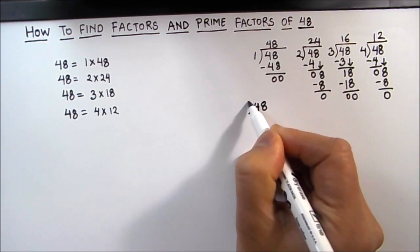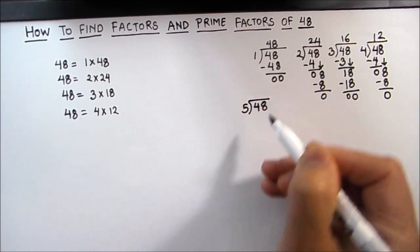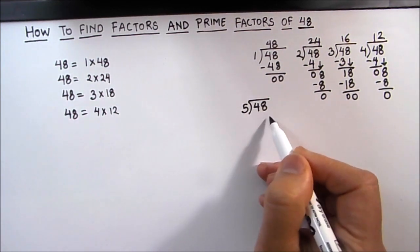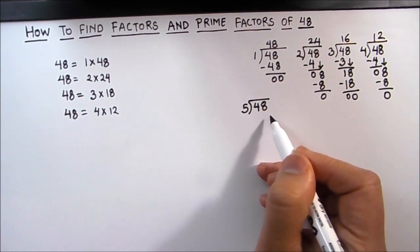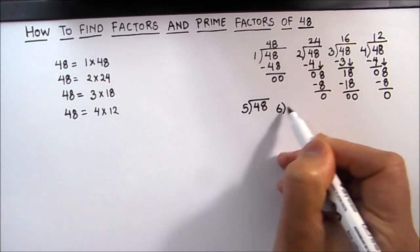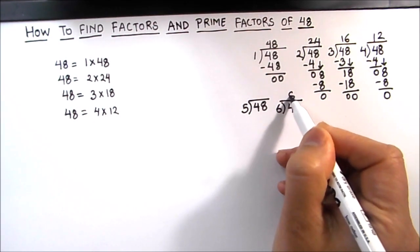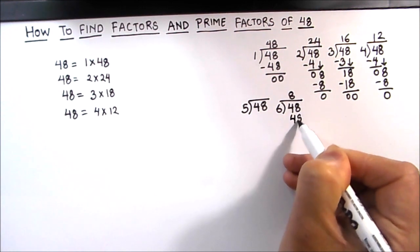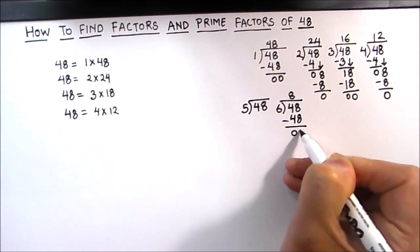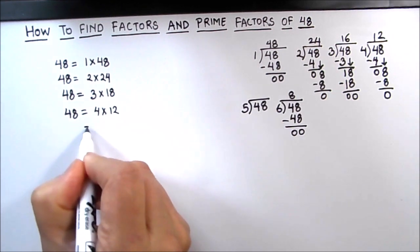Next we will divide 48 by 5. As 48 is an even number, it is not fully divisible by 5. So let's divide it by number 6. 6 times 8 is 48, so 6 is also a factor of 48. We got two factors: 6 times 8.